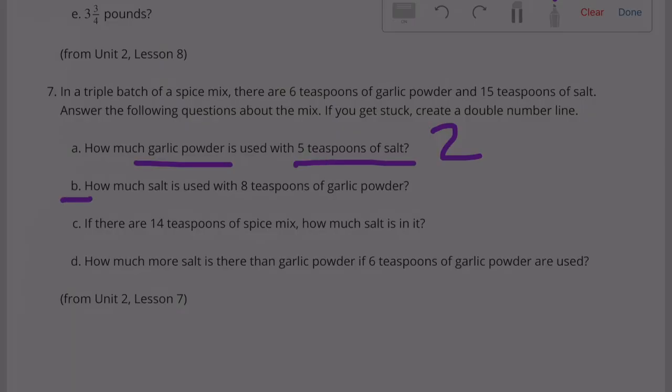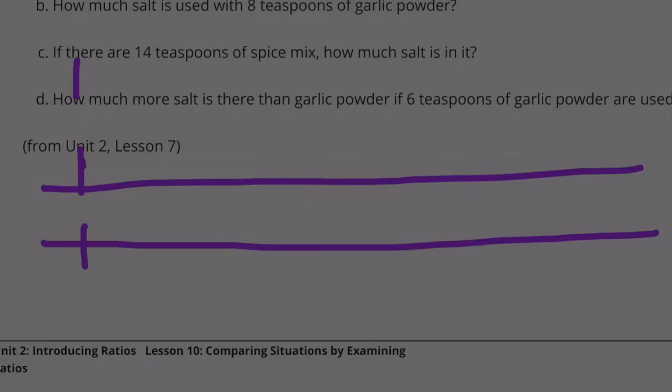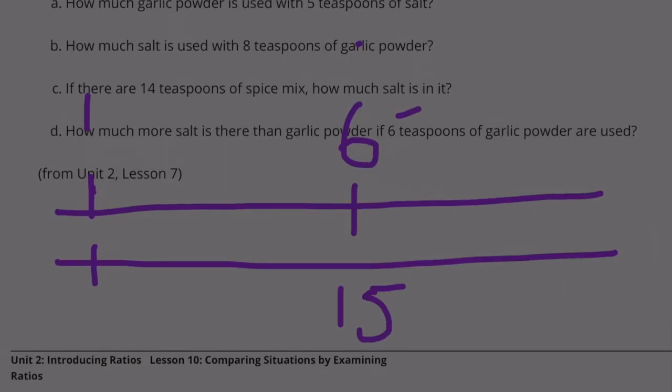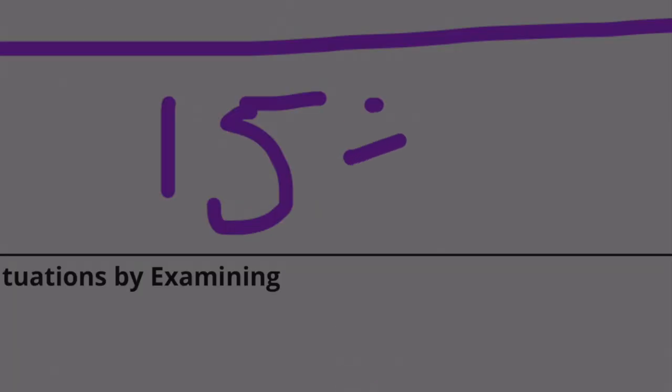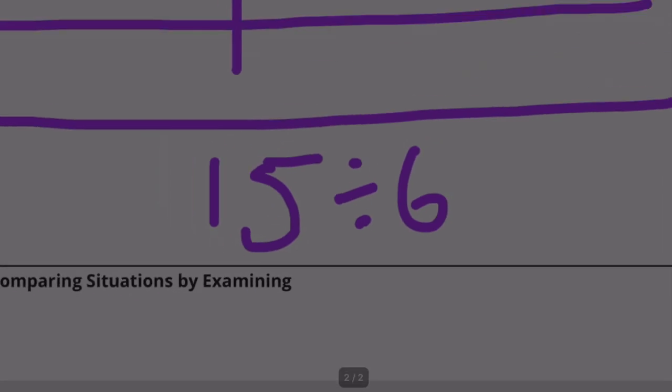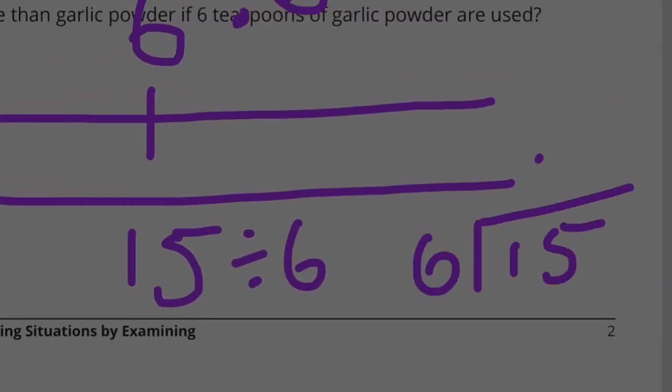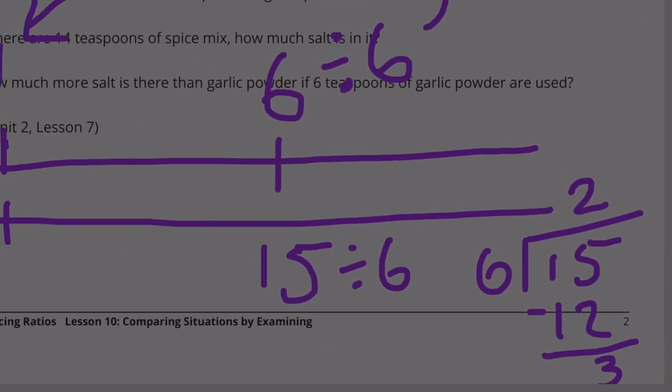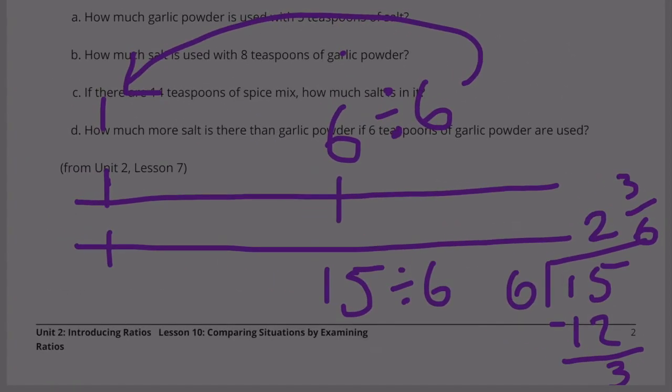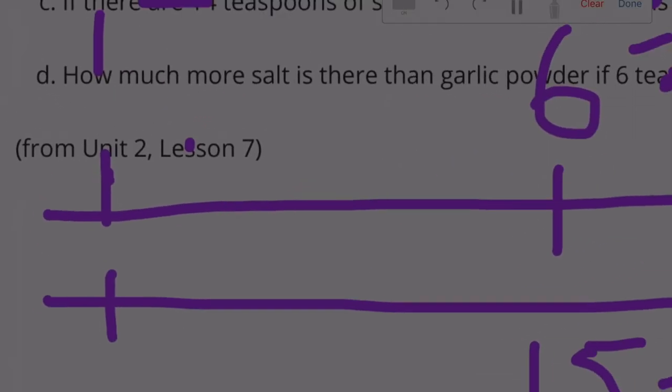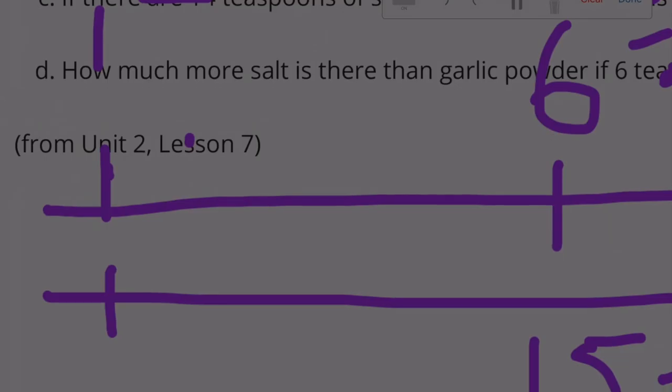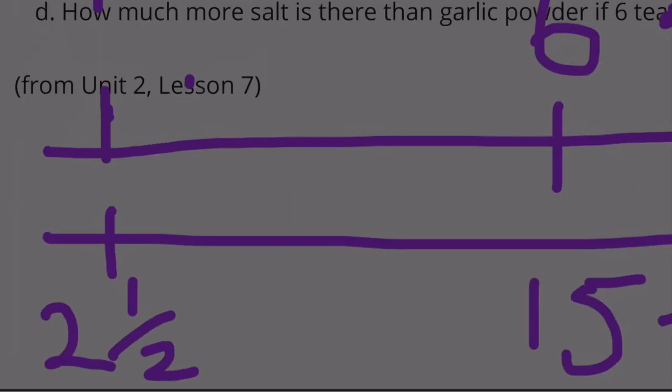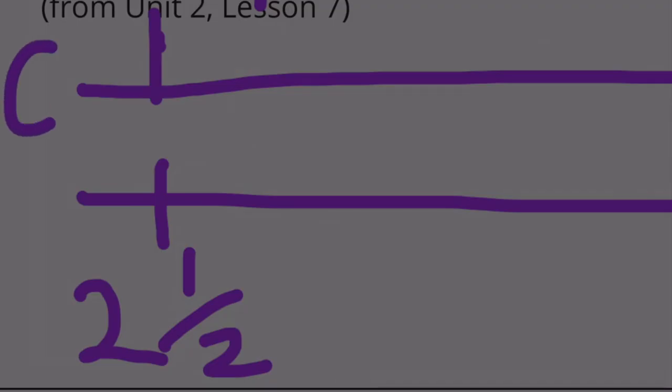B. How much salt is used with 8 teaspoons of garlic powder? 6 divided by 6 equals 1. 15 divided by 6. 2 and 3/6ths is the same as 2 and a half.